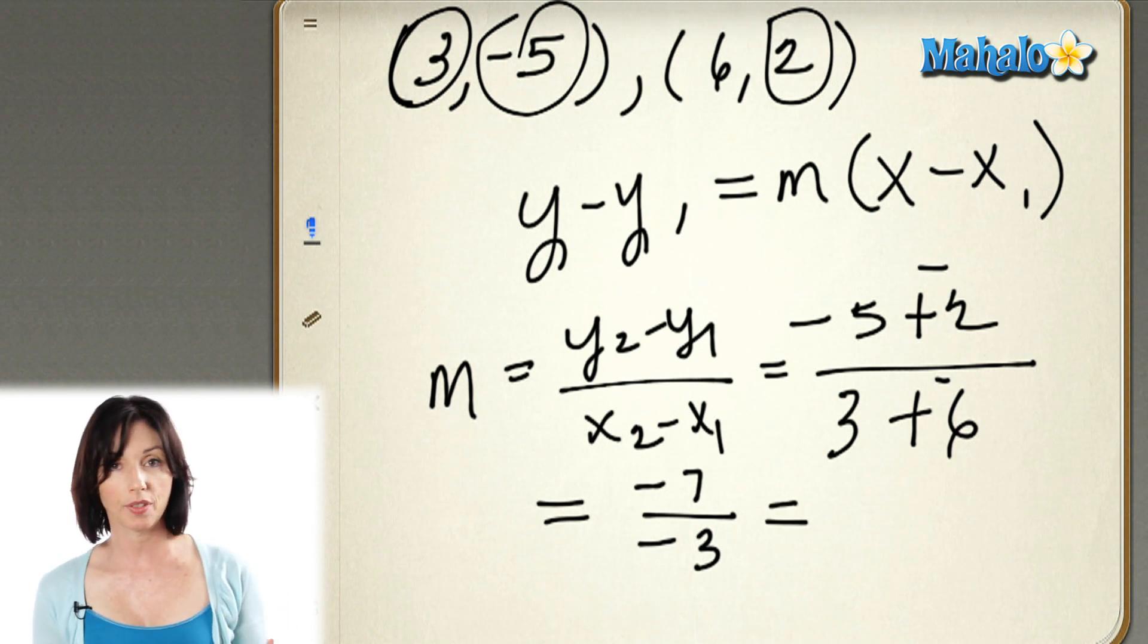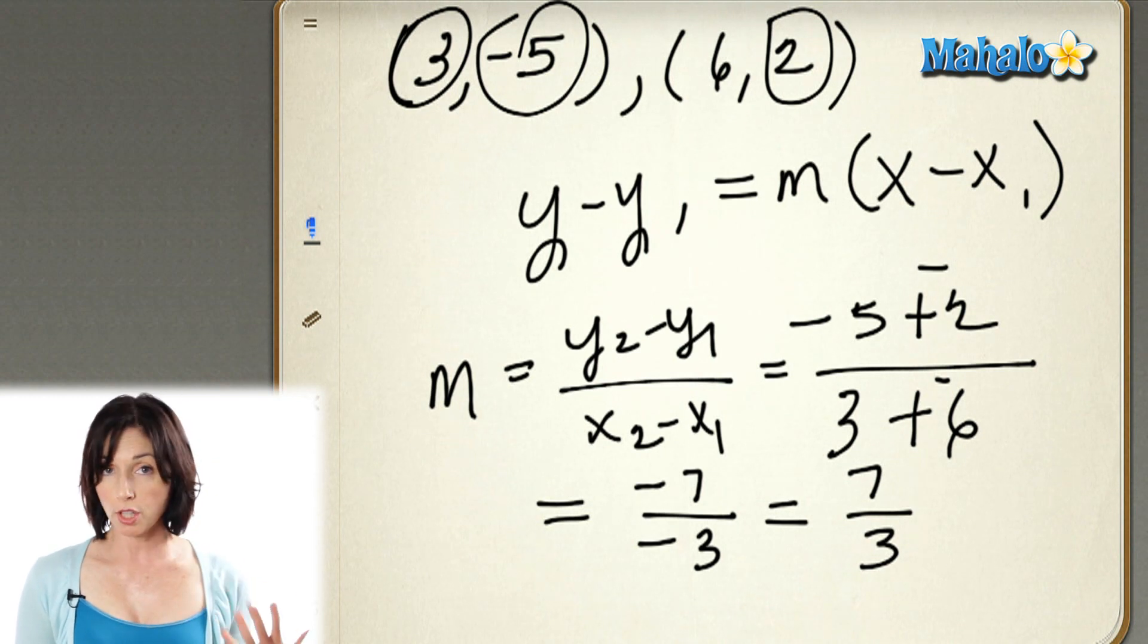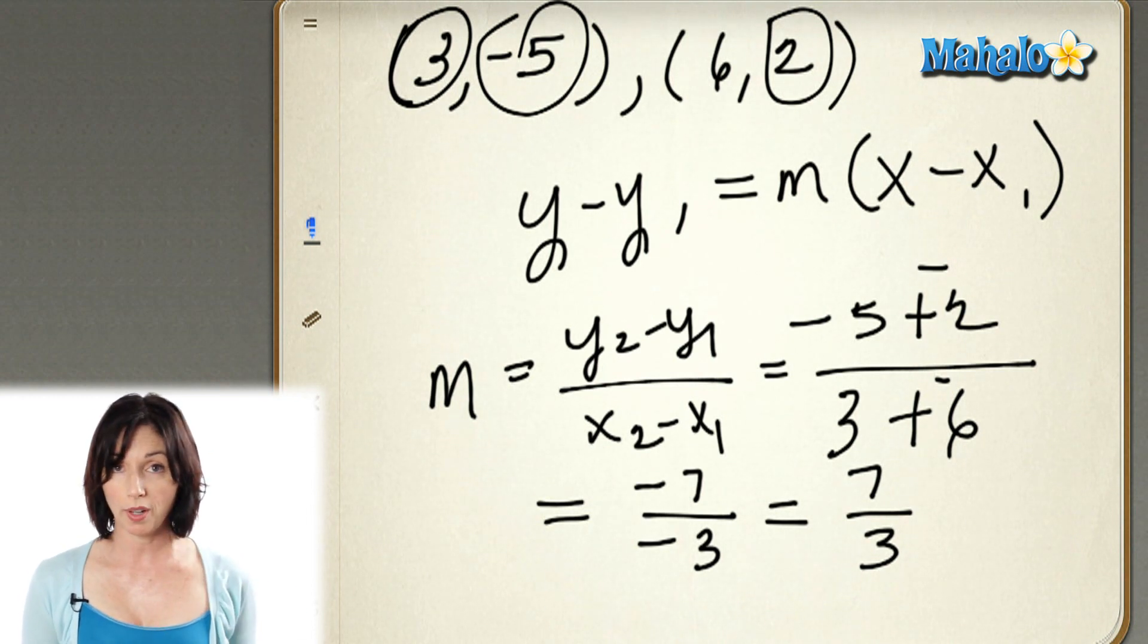Now I have a negative 7 over a negative 3. That's the same as 7 thirds. So the slope of my line that joins these two points is going to be 7 thirds. Now here's how you put it in point slope form. We're actually almost done.